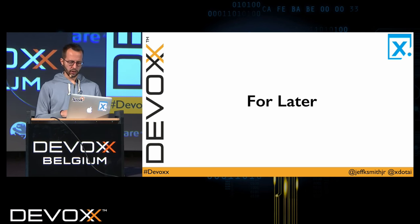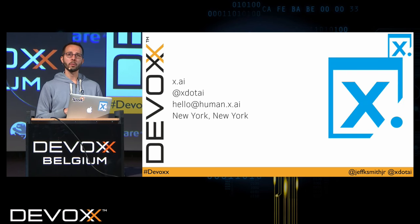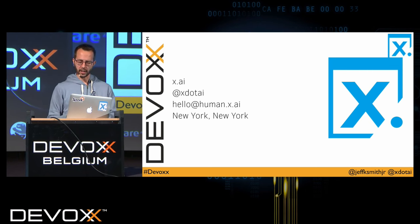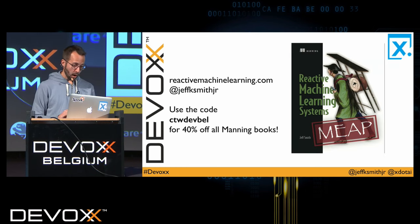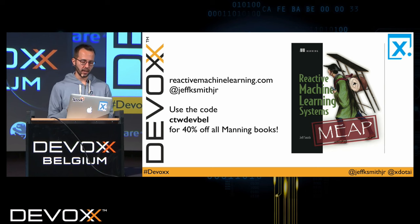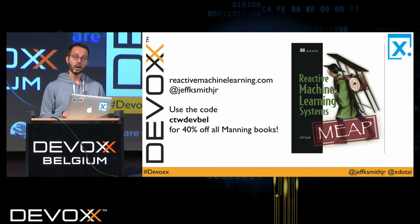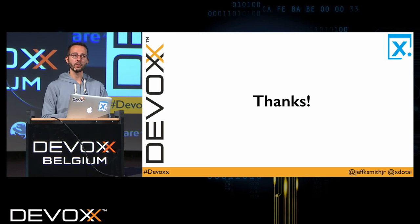There's great power in being able to use opt-in functionality in a polyglot codebase to encode your semantics in a very detailed and tactical manner, applying reactive principles and strategies when you so choose. A few things to check out: you can interact with an artificial intelligence yourself — hire an AI personal assistant at x.ai that will schedule all your meetings for you, with a free tier available. I've also written a book on this topic — use the code ctwdevbel for 40% off my book or any other book from Manning. That's all I have — thank you very much for listening today, I'd love to take your questions.